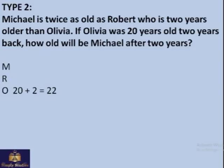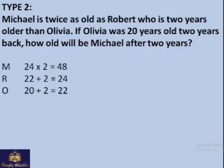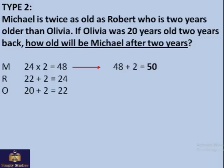Olivia was 20 years old 2 years back, so she must be 22 now. Robert is 2 years older, so he is 24. Michael is 2 times as old as Robert, so Michael is 24 multiplied by 2, which is 48. The question asks how old will Michael be after 2 years, so we add 2: Michael will be 50 years old. These two types are discussed in this video; in the next lesson we'll cover the harder types of age problems.